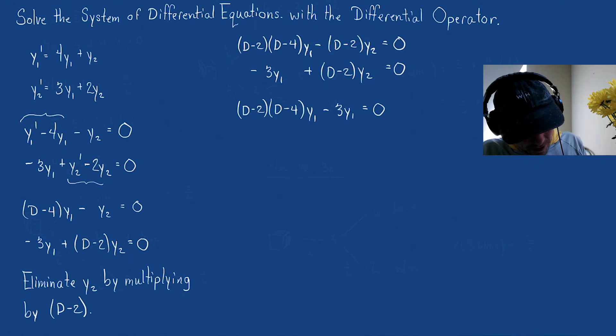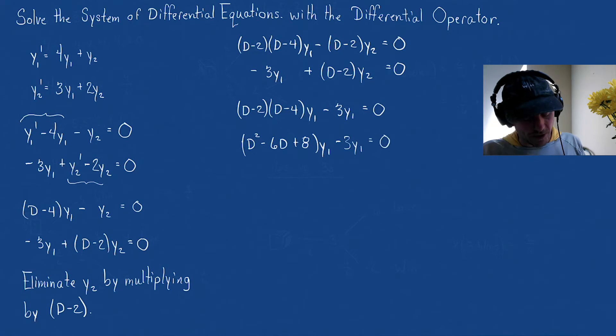So we're going to pick up, I'll write it out. So this is going to be (D² - 6D + 8)y1 - 3y1. If we combine the like terms, I have an 8y1 inside the parentheses and I subtract 3y1. So this is (D² - 6D + 5)y1 = 0.